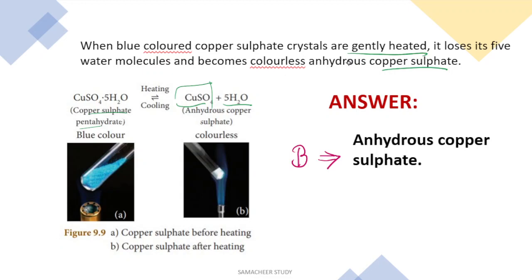B is the colorless compound called Anhydrous Copper Sulphate — 'anhydrous' meaning water has been removed.